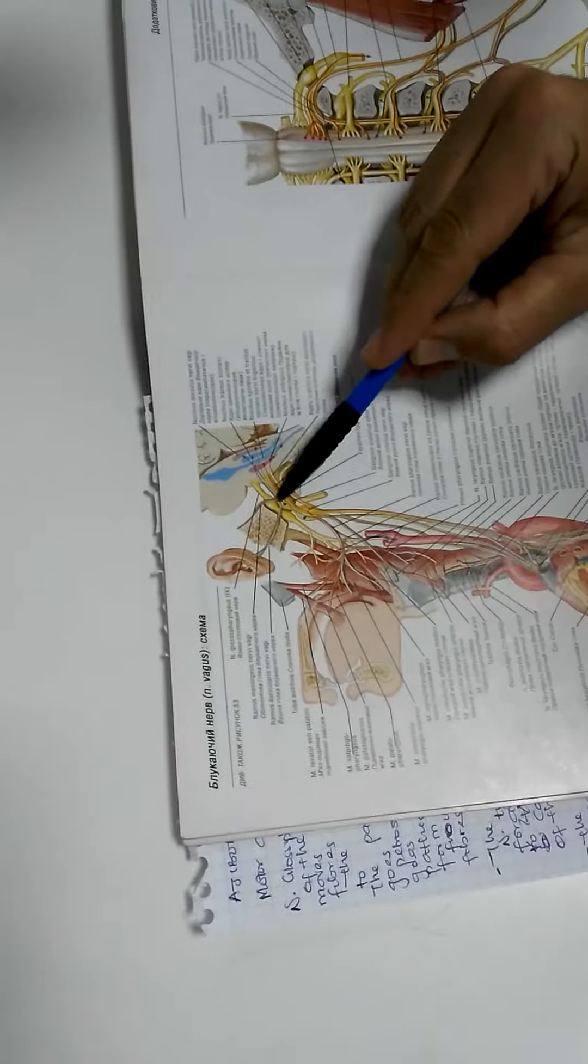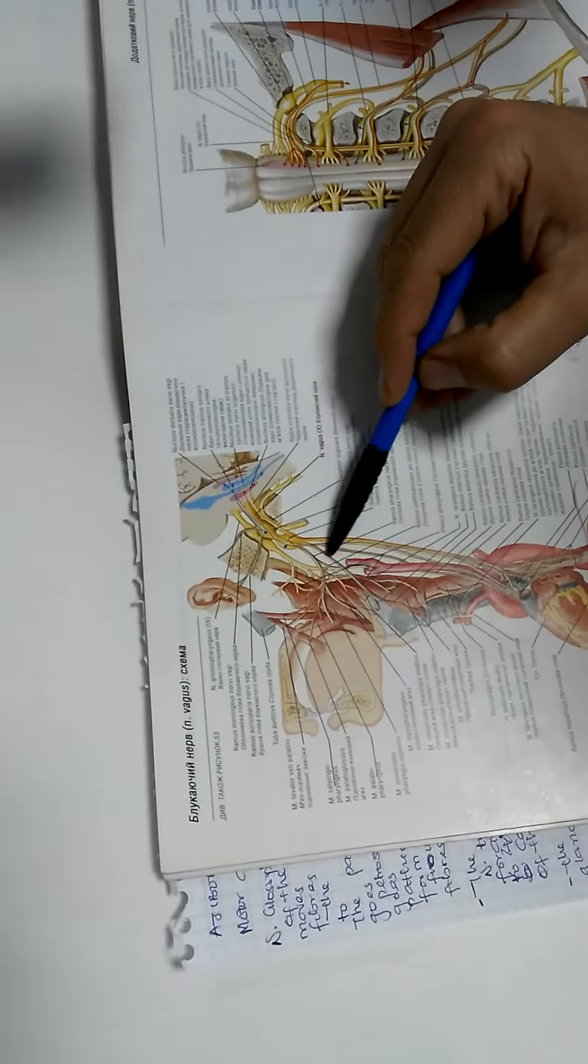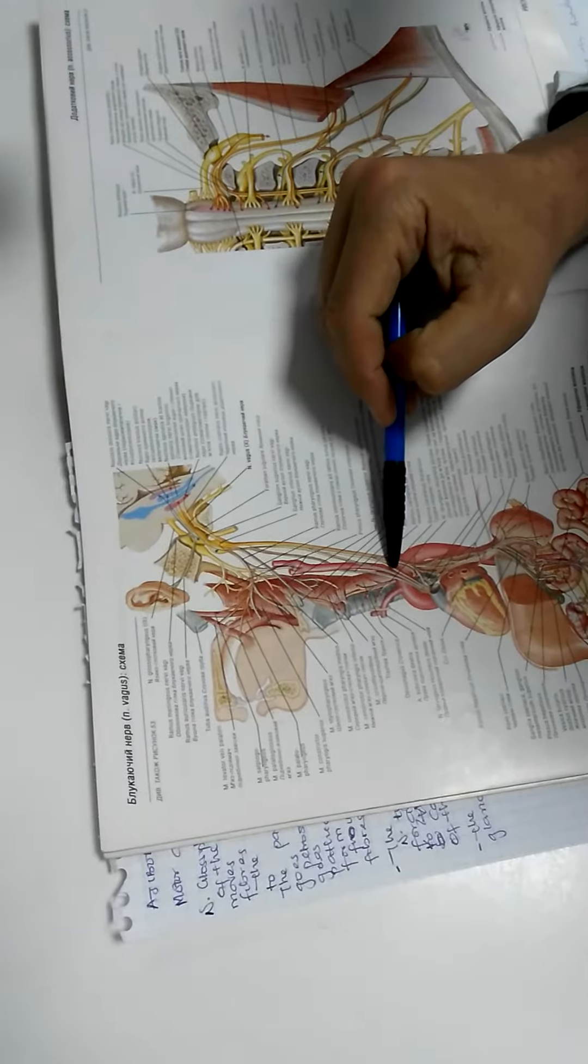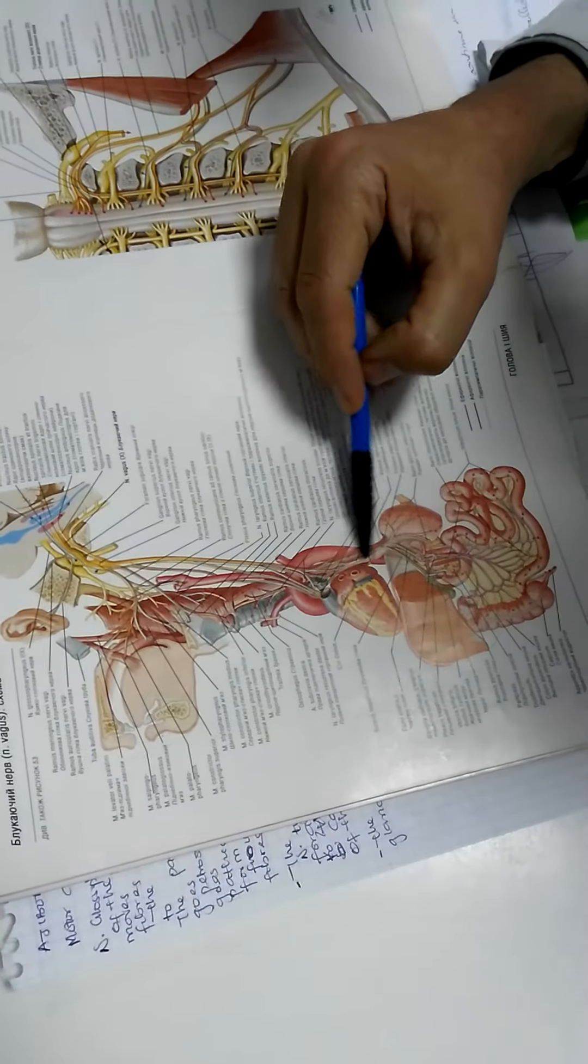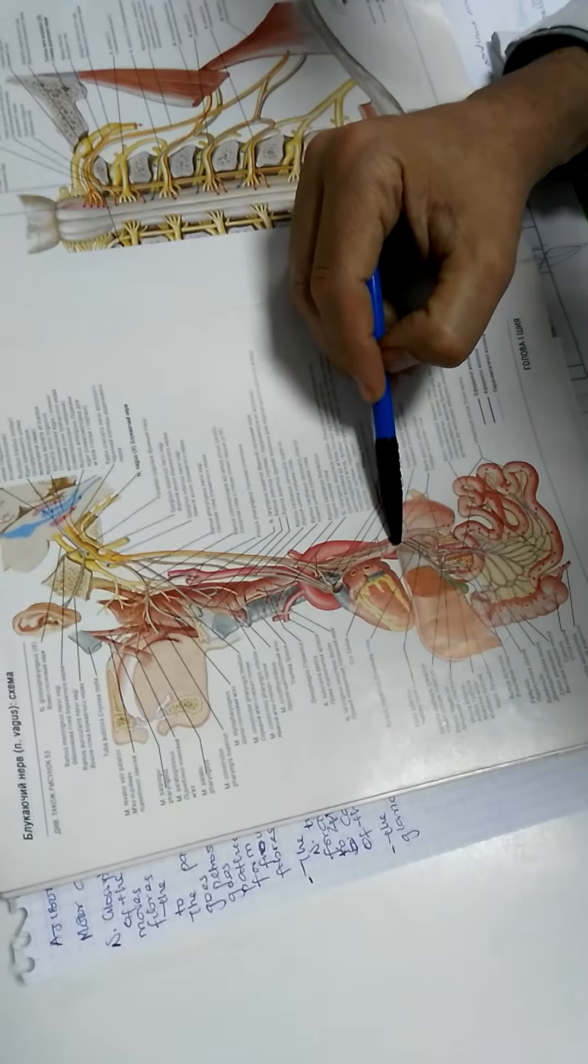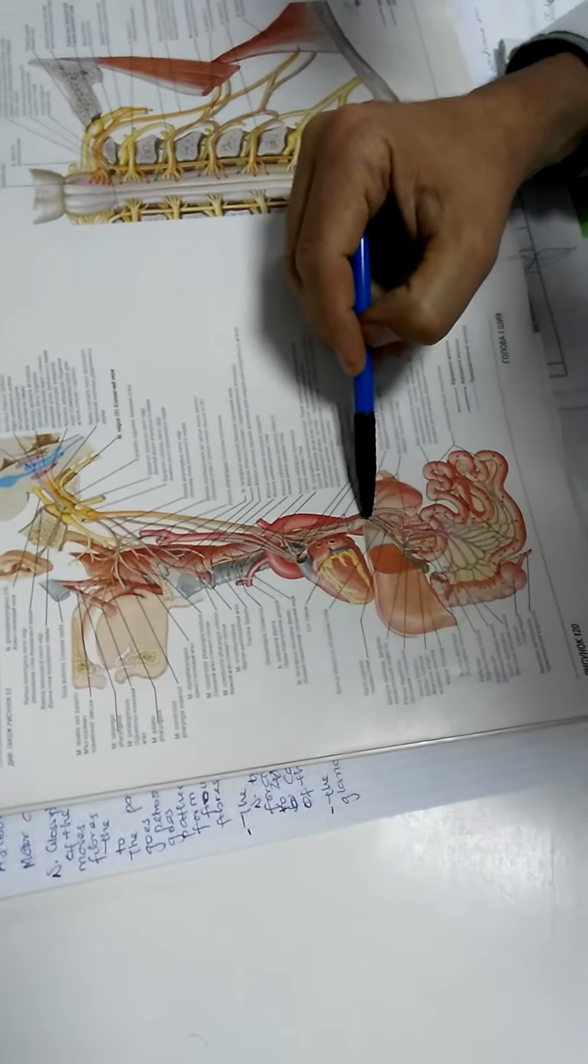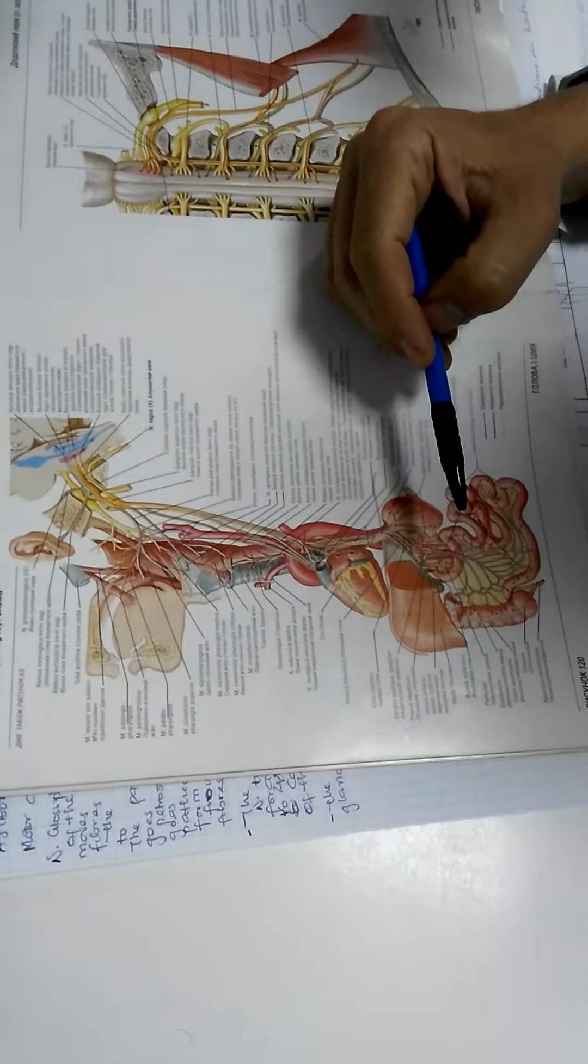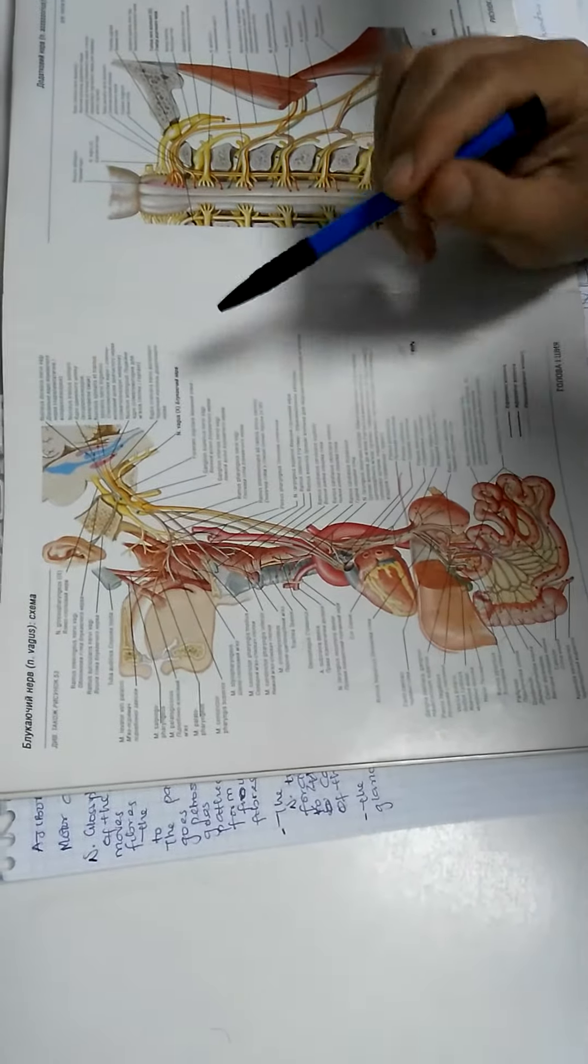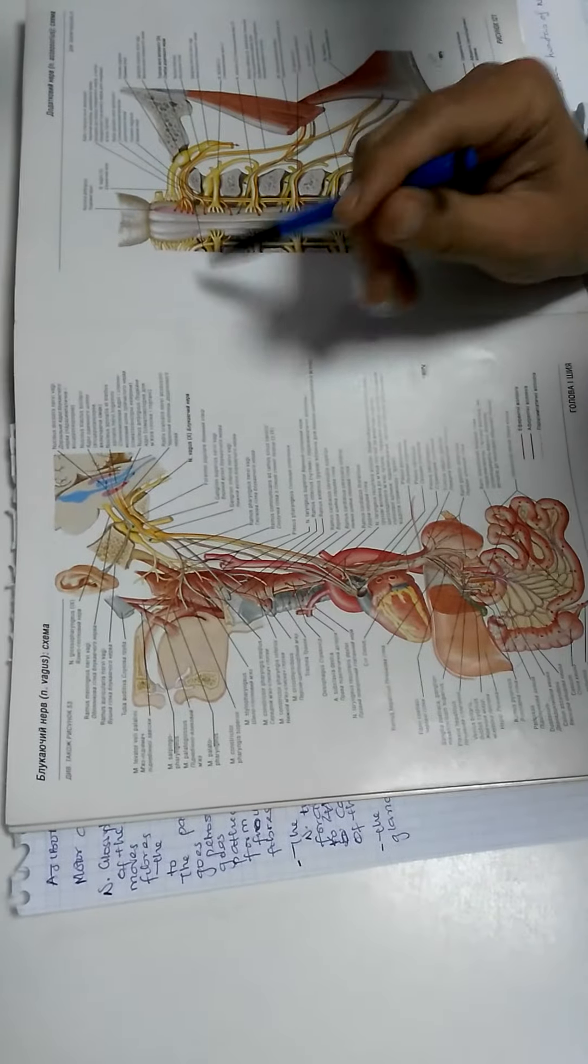First part: pars cranialis inside the cavity of the skull. Pars cervicalis on the level of the cervix. Pars thoracica in the thoracic cavity and pars abdominalis in abdominal. Pars cervicalis gives only two nerves, both are sensory.